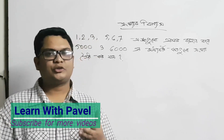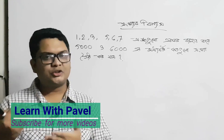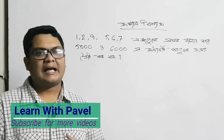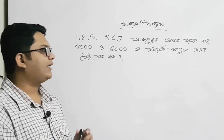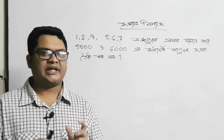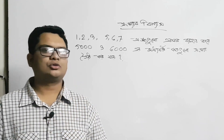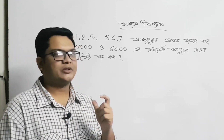This is the permutation problem. Now we will see that we will give a little bit of condition. This is the permutation setup.